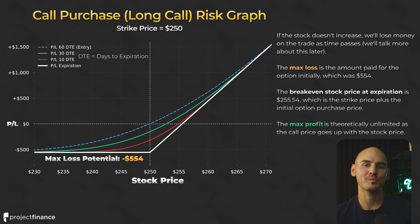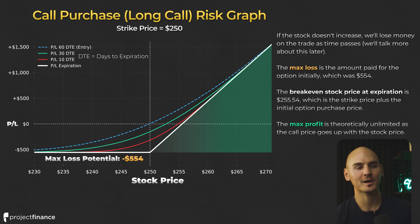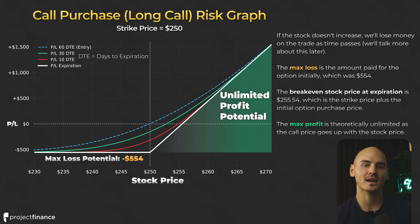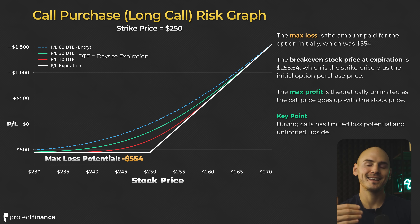The maximum profit when you buy a call option is theoretically unlimited. On the risk graph, we just have a curve that goes up to the right. Since there's no limit to how high a stock's price can go, there is also no limit to how valuable a call option can get. The key point is that buying calls has limited loss potential and unlimited upside potential, giving you a lot of reward potential for the risk that you are taking.